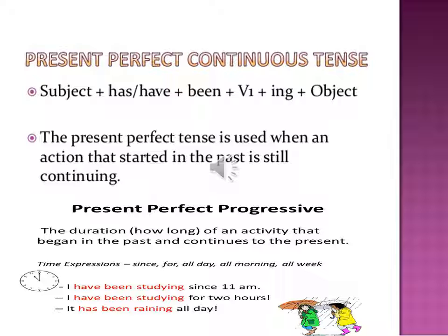Let us see the structure of Present Perfect Continuous Tense. The structure is: subject plus has or have plus been plus first form of the verb plus -ing plus object. For 'perfect' we are using has or have; for 'continuous' we are using the first form of the verb plus -ing; and in order to join these two, we are using the word 'been'.